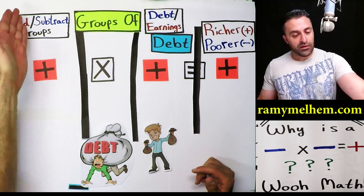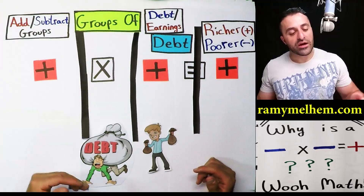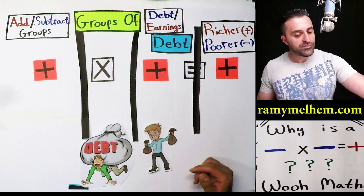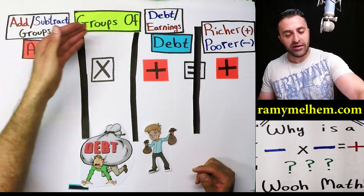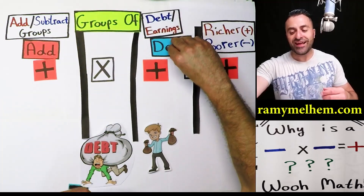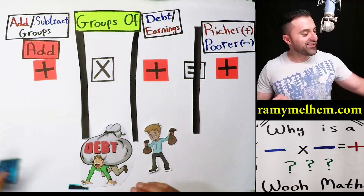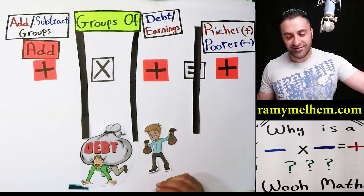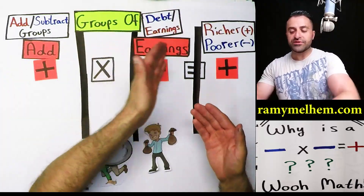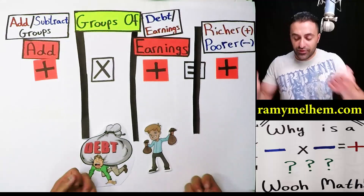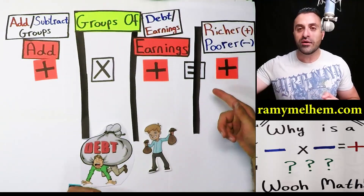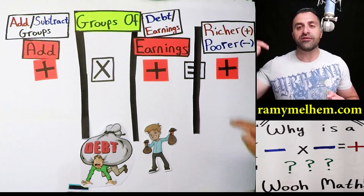This here means add or subtract groups — which one is this? It's add. So we'll say add — add groups of earnings. If we add groups of earnings, we're adding earnings. Is he going to get richer or poorer? Richer. Positive.